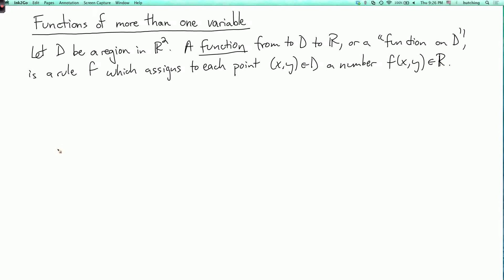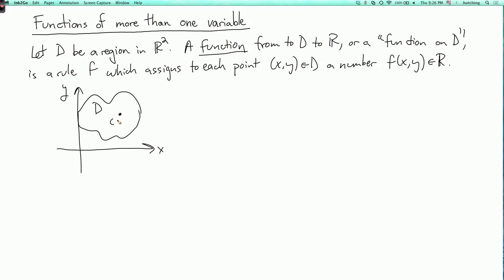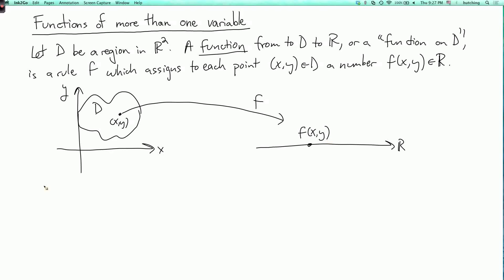We can visualize it like this. In the xy plane, we have this region D — the set of points for which the function is defined. For any point xy in the domain, it is mapped by f to some number f(xy) on the real line. D is called the domain of f, and this is a subset of R².